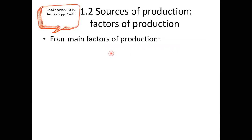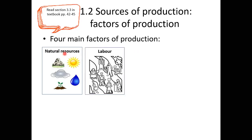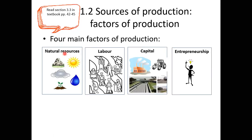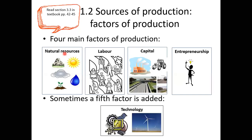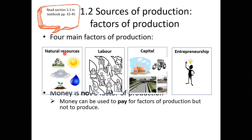Sources of production — factors of production. We have four main factors of production: natural resources (also called land), labor, capital, and entrepreneurship. However, there is a fifth factor of production considered nowadays, which is technology. Money is not a factor of production, but money is used to pay factors of production. The return for labor comes in the form of wages and salaries, paid through money.